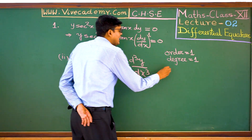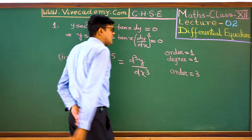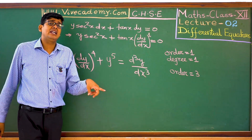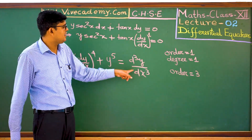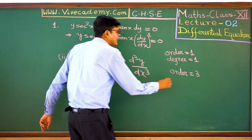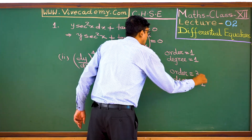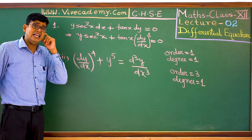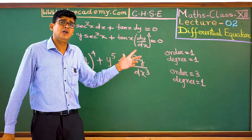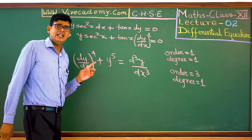How many times has y been differentiated? Three times. Yes — it has been differentiated three times. So the order of this differential equation is 3. Now check the power of the highest order derivative — its power is 1. So the degree is also equal to 1. The order is 3 and the degree is 1.